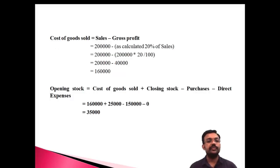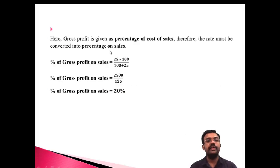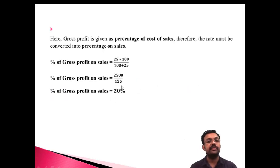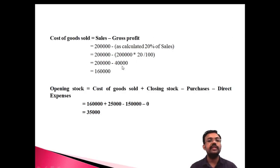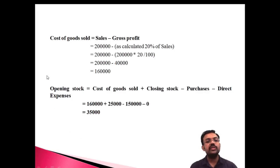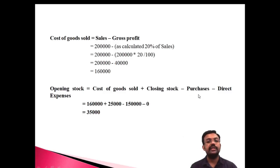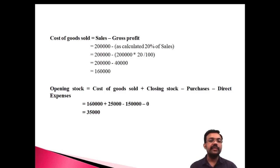Now, Cost of Goods Sold = Sales − Gross Profit = 2,00,000 − 20% of 2,00,000 = 2,00,000 − 40,000 = 1,60,000. Opening Stock = Cost of Goods Sold + Closing Stock − Purchases − Direct Expenses = 1,60,000 + 25,000 − 1,50,000 − 0 = 35,000. So the opening stock is ₹35,000.